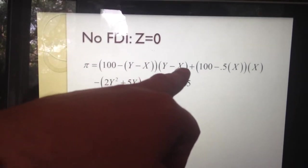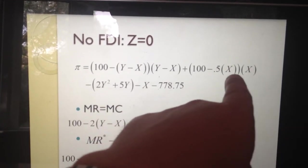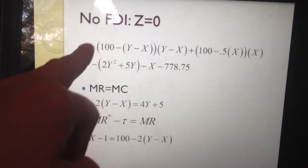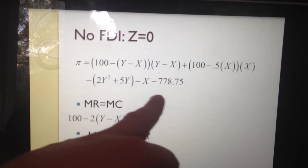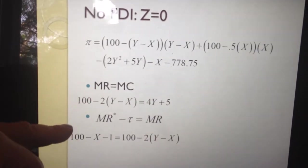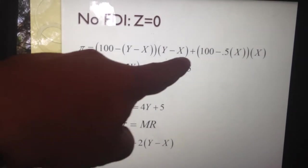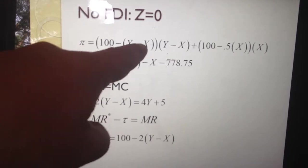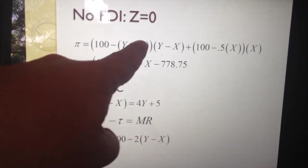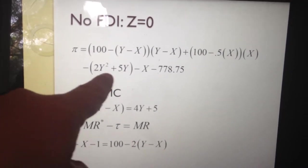Without FDI, profit equals price times quantity in Ireland plus price times quantity in the UK. There is no Z — no foreign direct investment — so everything is made in Ireland. We have production costs, shipping costs, and the fixed cost. Marginal revenue equals marginal cost: marginal revenue is the derivative of the revenue function with respect to quantity, giving us 100 minus 2 times the quantity.